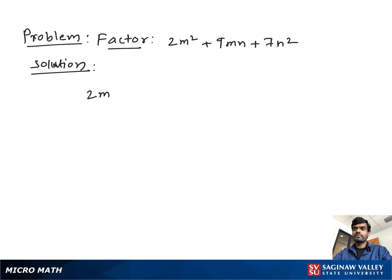Factor 2m² plus 9mn plus 7n². What we do first? We multiply the coefficient of m² with the coefficient of n². 2 times 7 which is 14.